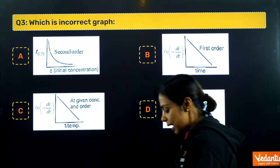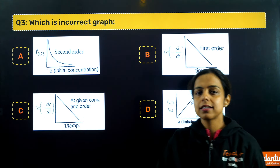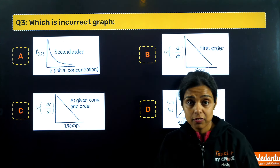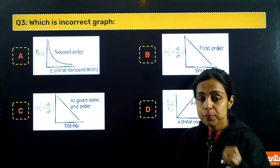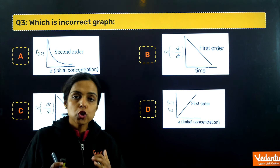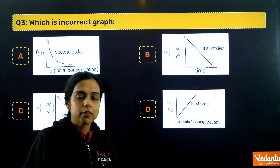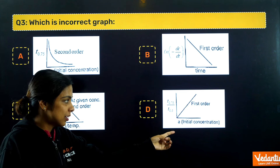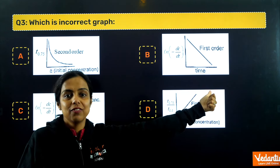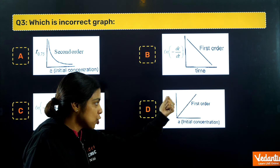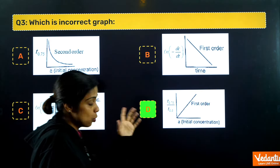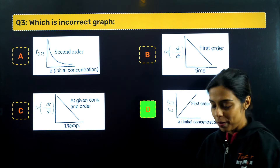The next question is a graph-based question from chemical kinetics. Graphs for zero order and first order reactions are highly important. You have to find the incorrect graph. For a first order reaction, the ratio of t(75%) to t(1/2) must be constant — it should not increase with concentration. The graph showing this ratio increasing is incorrect. So option D is the incorrect graph; the rest are fine.